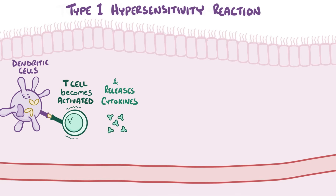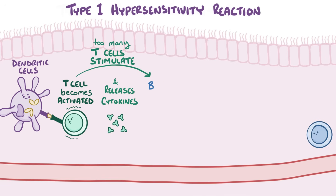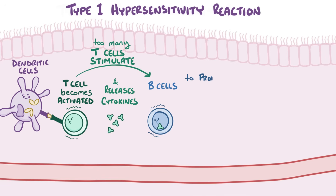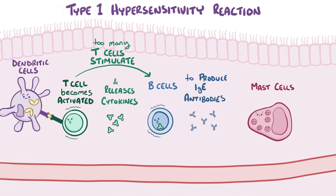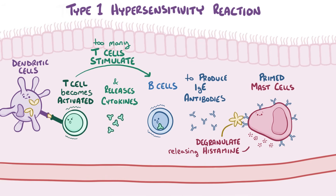The exact type of T-cell determines the type of immune response, and in allergic rhinitis there's a bit of a T-cell imbalance. There are too many T-cells that, when activated, stimulate B-cells — another group of lymphocytes — to produce IgE antibodies. Those IgE antibodies get released into the bloodstream and bind to mast cells, which are immune cells in the tissue that carry within themselves a load of histamine. Once bound by IgE, the mast cells are primed, meaning if pollen enters the body again in the future, those mast cells degranulate and release their histamine into the local tissue.